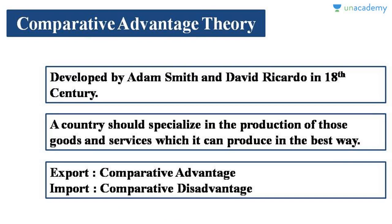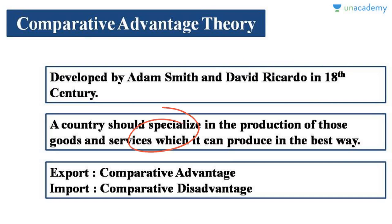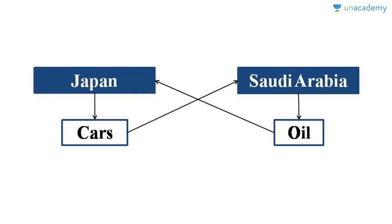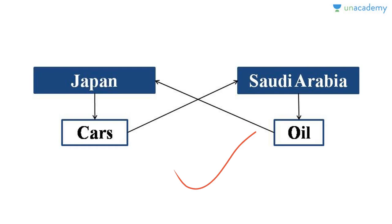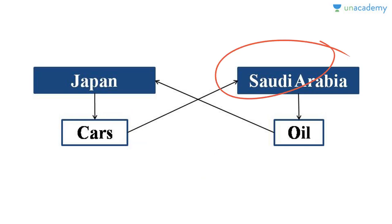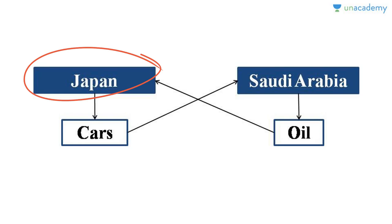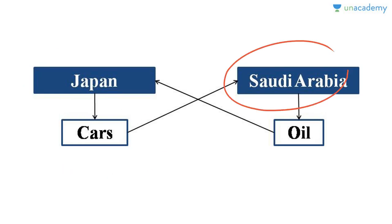Comparative advantage theory says that a country should specialize in the production of those goods and services which it can produce in the best way. For example, Japan and Saudi Arabia: Japan is the world leader in the production of cars, while Saudi Arabia is known for oil. Japan has comparative advantage in cars and Saudi Arabia has comparative advantage in oil.